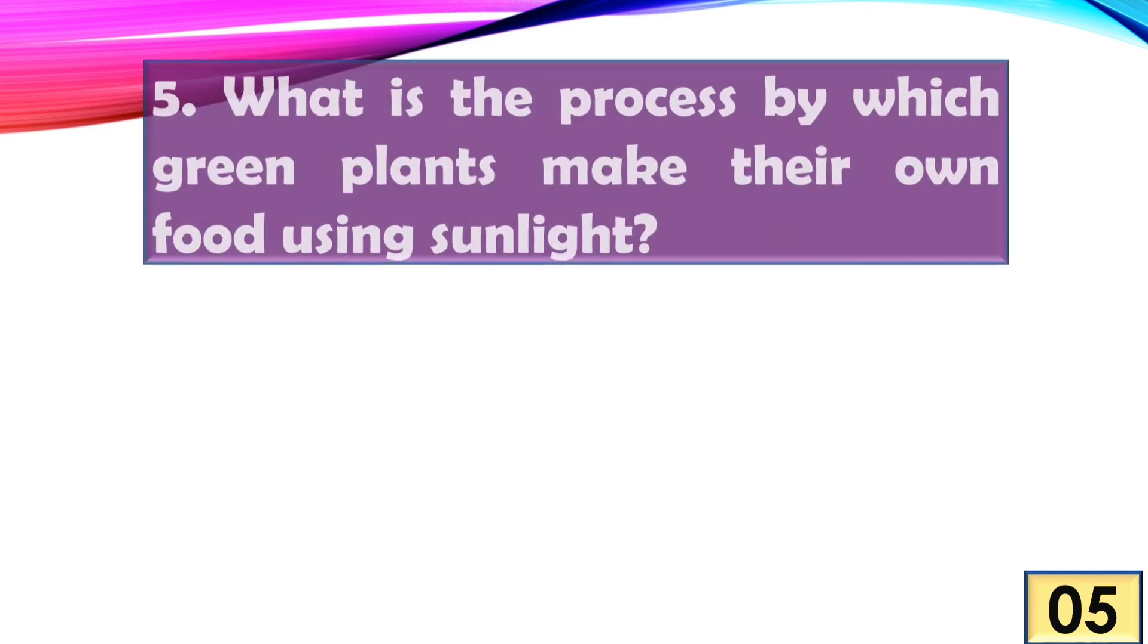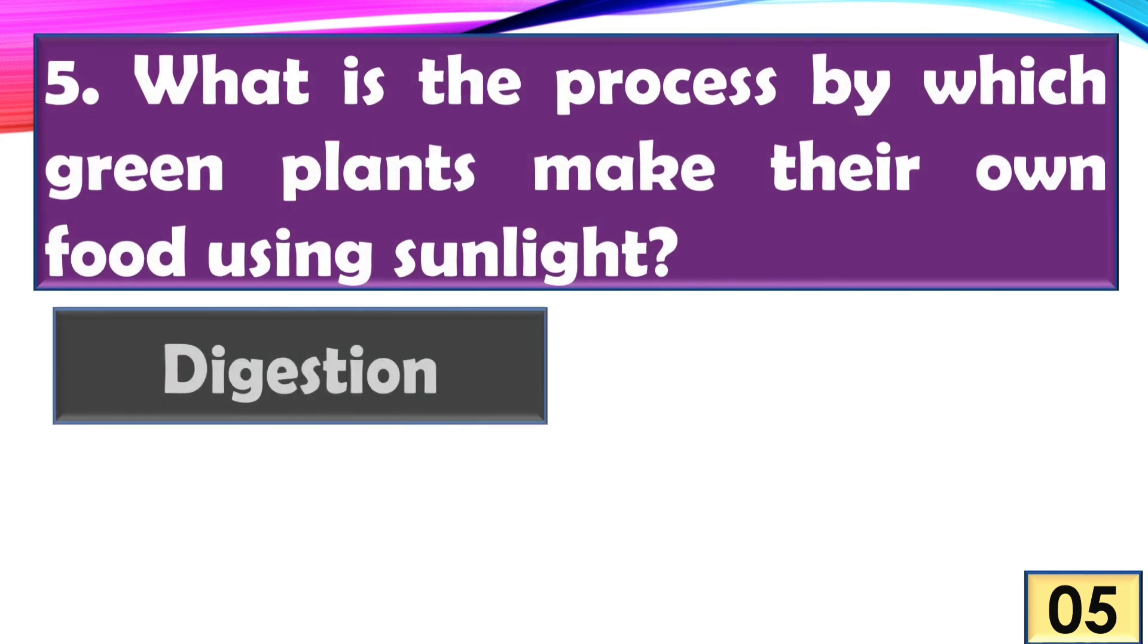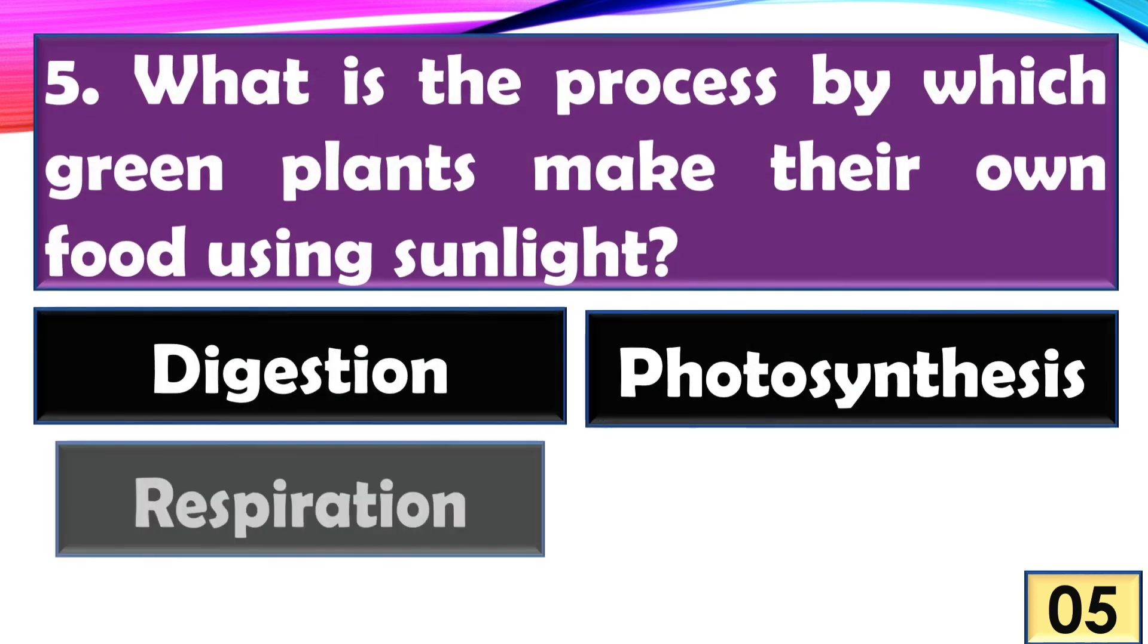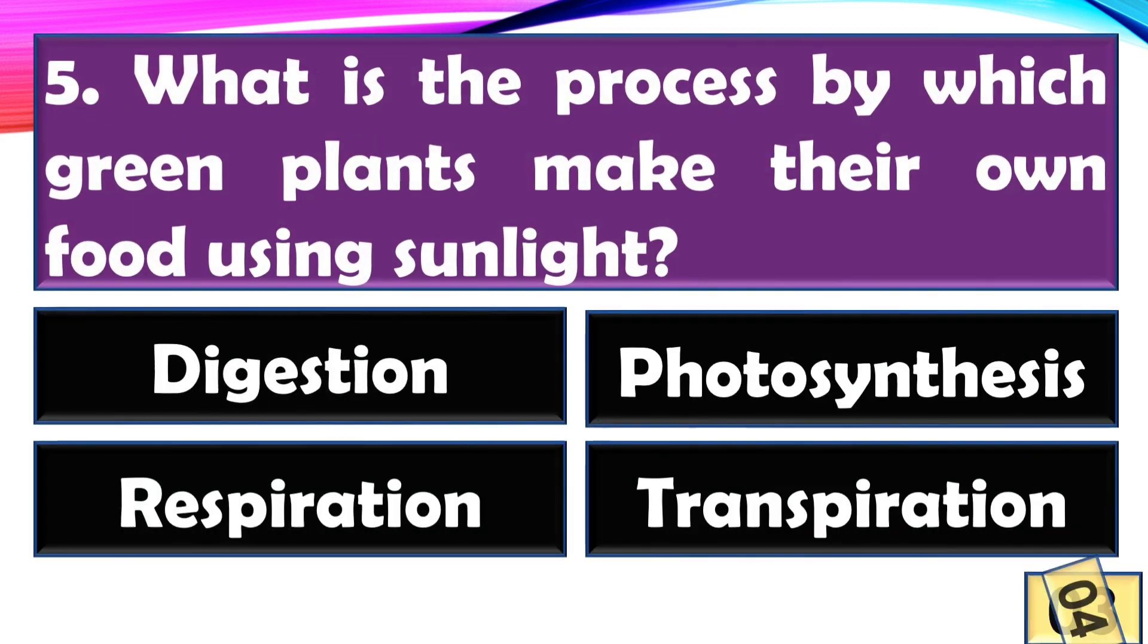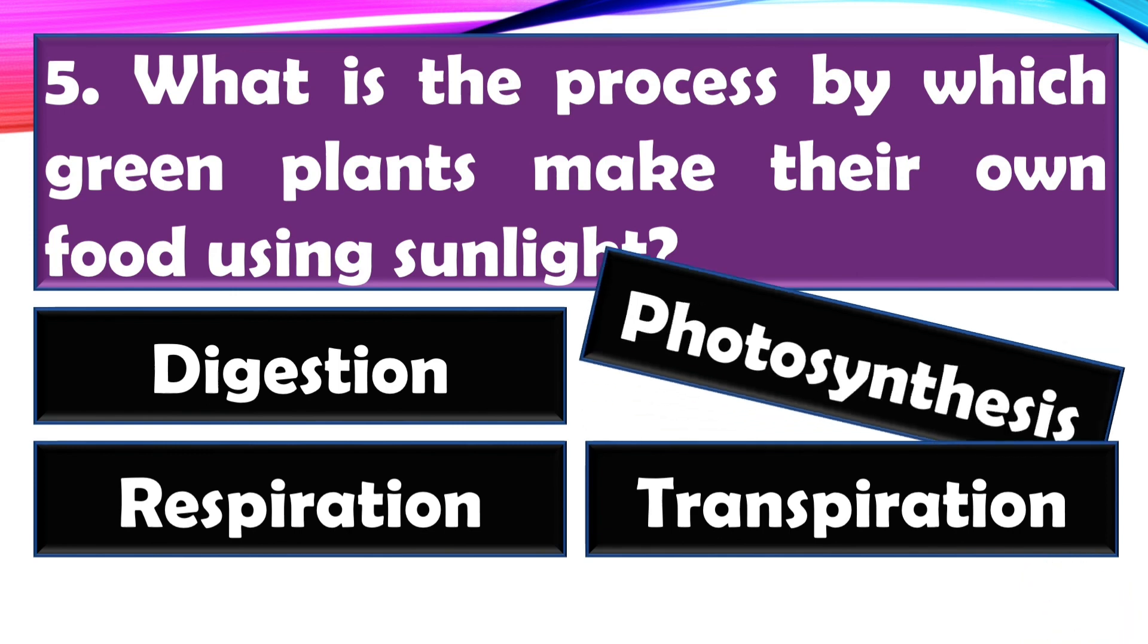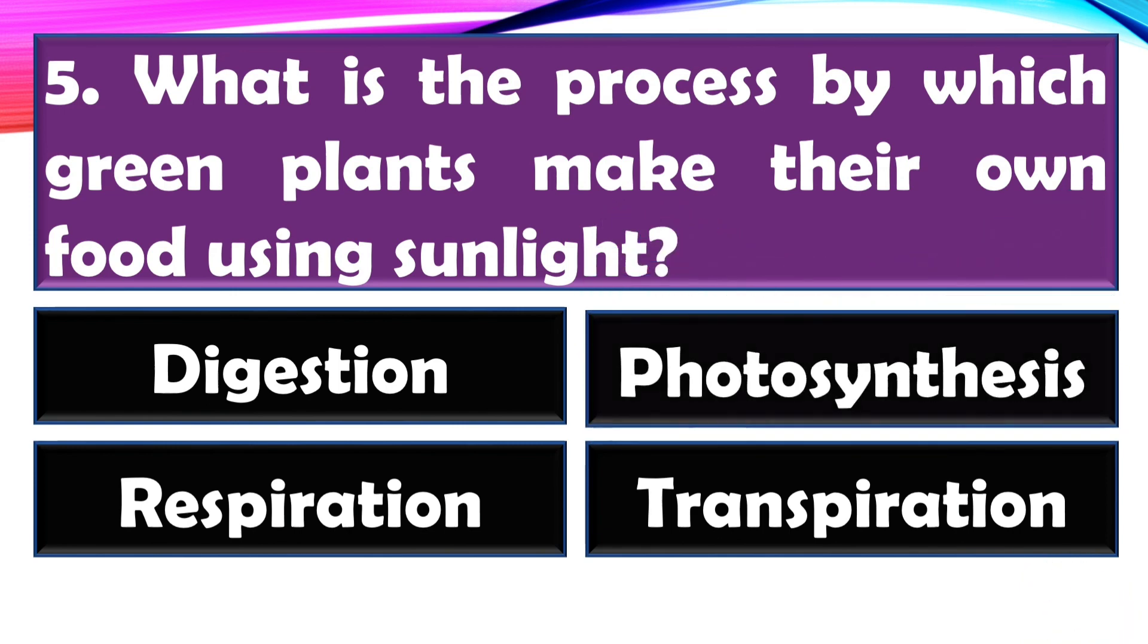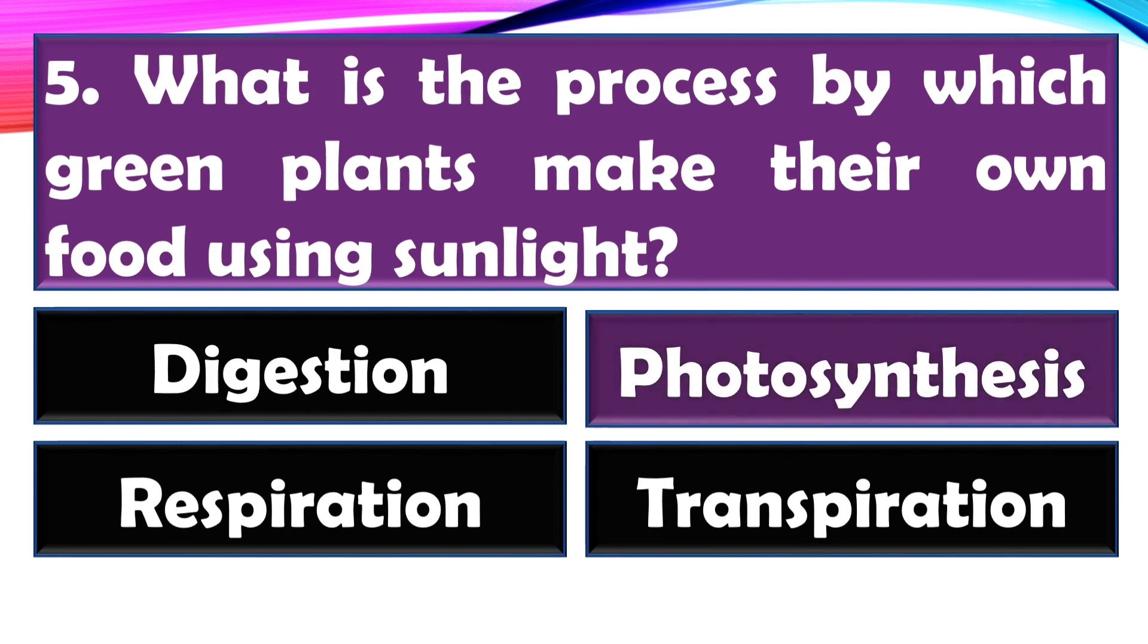What is the process by which green plants make their own food using sunlight? The right answer is option B, photosynthesis.